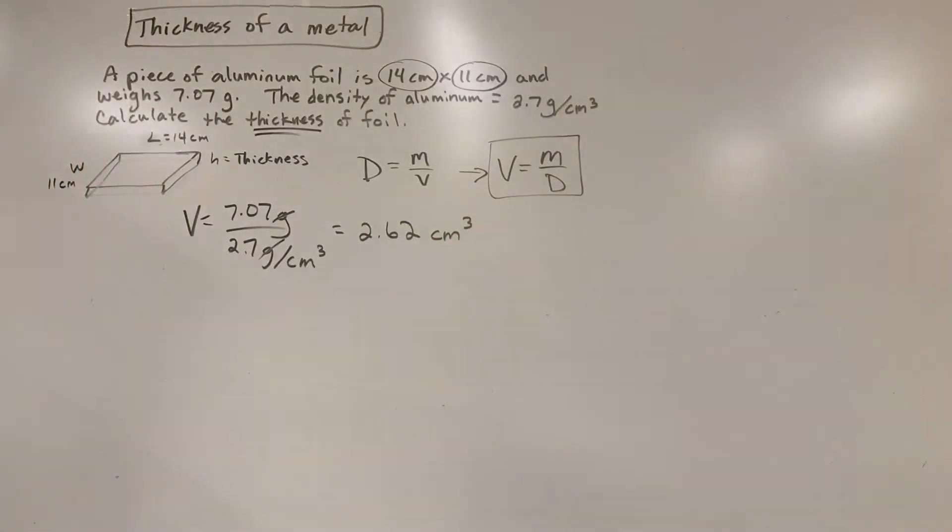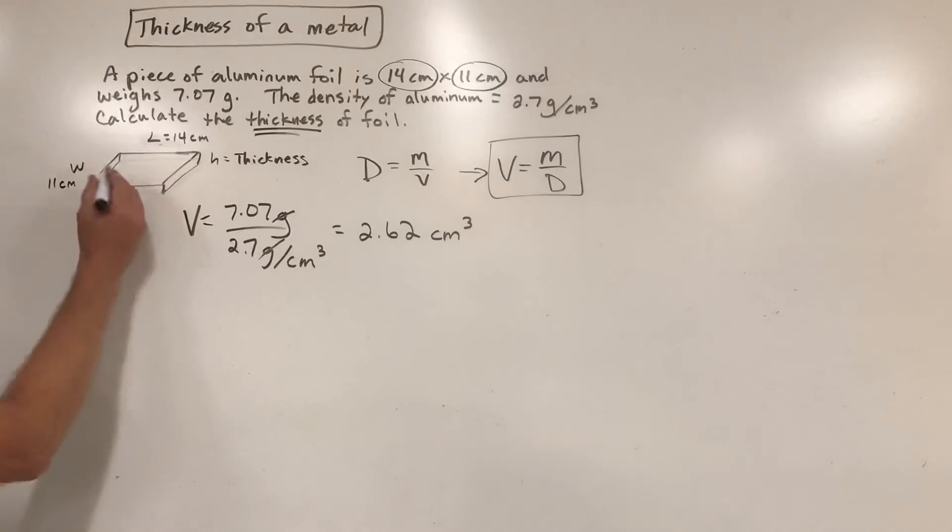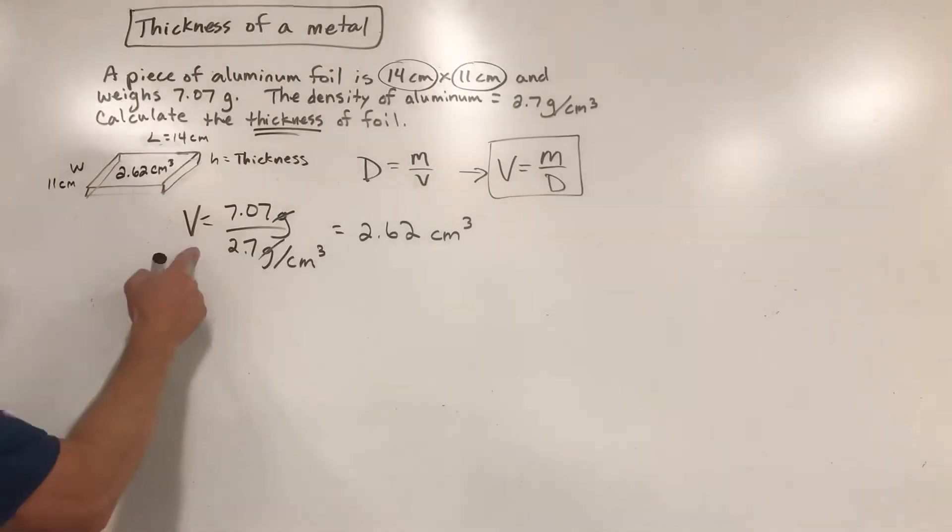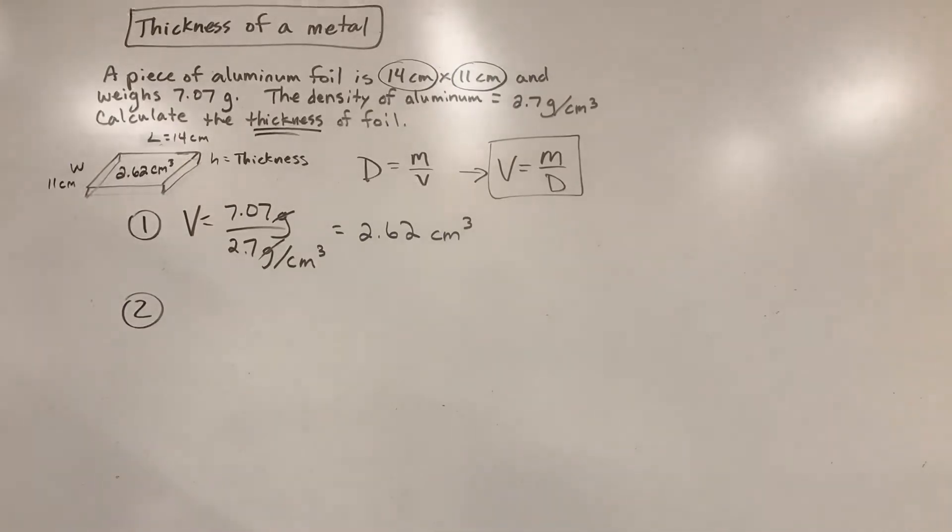Basically we've gotten ourselves, we figured out the volume using the density. Now we got to do one more piece of the puzzle. A lot of people like to stop here and they kind of lose track of what this means. These are cubic units. That is the volume of this really flat box, 2.62 cubic centimeters. What I need to do is I need to try to extract this out now and figure out what height would it have to have in order for this to be true. I'm going to use one other geometry formula. Step two is going to be another way of getting volume, but we're going to manipulate it to fit what we want.